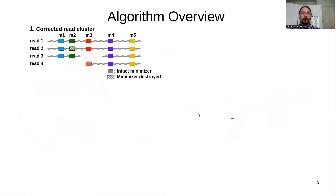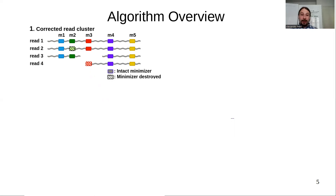Here you can see an overview of our algorithm. We start with a corrected read cluster — a set of reads that belong to one gene family — and we generate minimizers for those reads. Minimizers are k-mer subsampling structures that are very common in our field. We can have intact minimizers and also destroyed minimizers, represented by hatched boxes. We call a minimizer destroyed if, for example, a sequencing error changed the minimizer's sequence, so we no longer have the original minimizer sequence for that read.